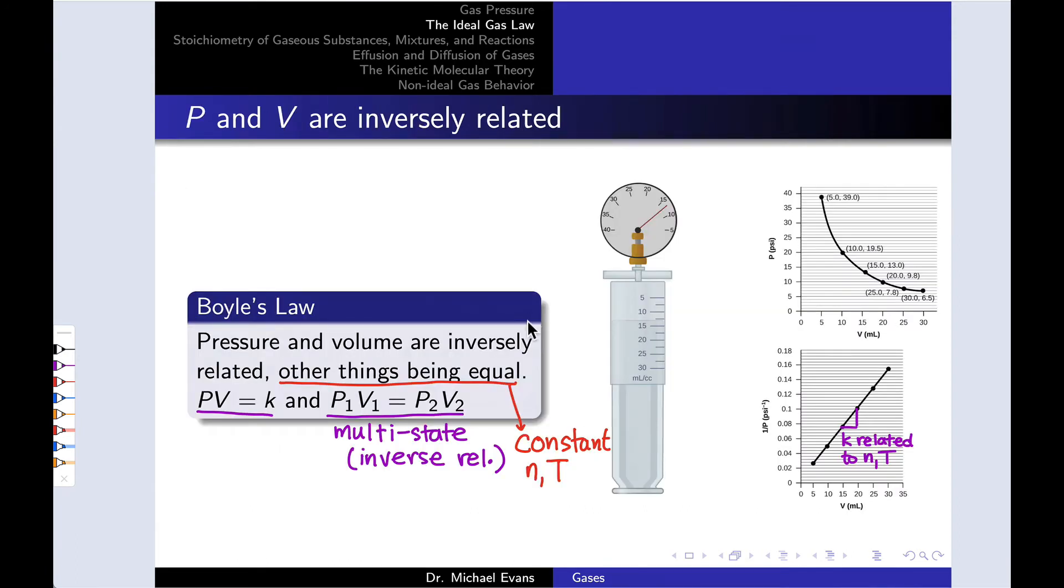Finally, let's look at pressure and volume. Pressure and volume are distinct from the previous two relationships in that they are inversely related when the other variables are held constant. So a constant number of moles, closed container, constant temperature—something like a thermostat controlled room. Pressure times volume now is equal to a constant, and the multi-state form uses this idea. Pressure times volume is a constant regardless of what the pressure and volume are, so P1 times V1 equals P2 times V2.